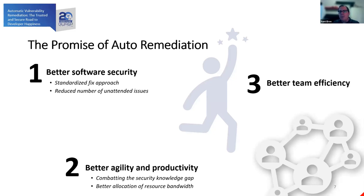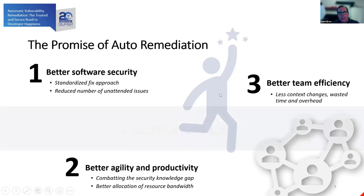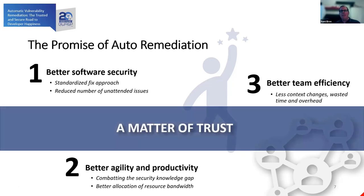Prior to release, agility and productivity are mainly about combating the security knowledge gap mentioned earlier, but also better allocation of bandwidth. Importantly, I'm not pointing at the developer team here — I'm actually talking about appsec. Appsec is much more restricted in terms of bandwidth, and being able to funnel their effort on things that matter in terms of complexity would be of extreme value to an organization. Better team efficiency is a byproduct of reducing overhead.